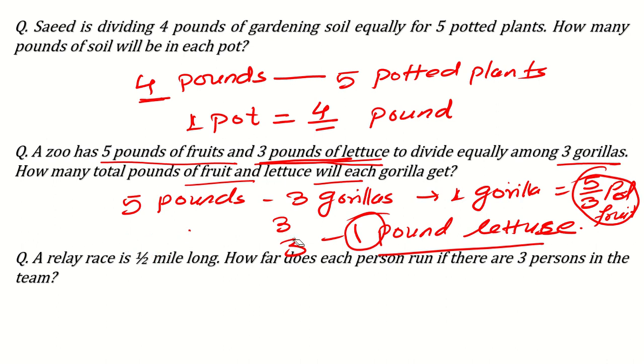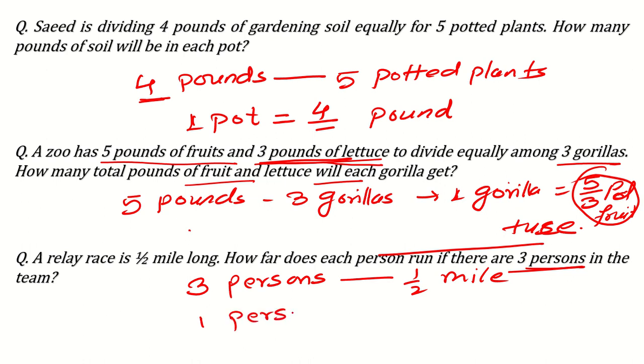Next question can be: A relay race is half mile long. How far does each person run if there are 3 persons in each team? See, total 3 persons, they are running half mile. So 1 person will run how much? It's 1 third, means 1 over 2 divided by 3 means 1 over 2 times 1 over 3 and it will be 1 over 6 miles. Like this, you can get the answers easily. But make sure that you are taking extra care for the fractions because in exam they will write the option, if it is multiple choice. They will write 3 over 2 also, they will write 6 also just to confuse you. So take care of the calculation.